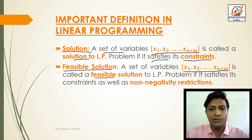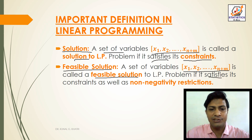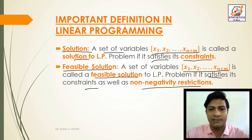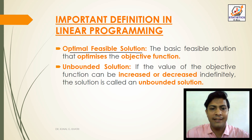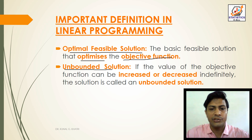A feasible solution is a set of variables x1, x2, x3, up to xn+n that satisfies the constraints as well as non-negativity restrictions. An optimal feasible solution is the basic feasible solution that optimizes the objective function.